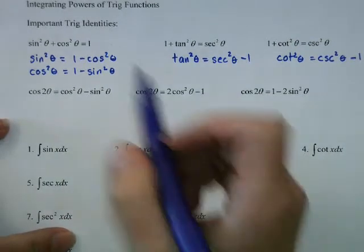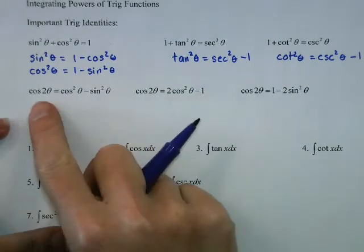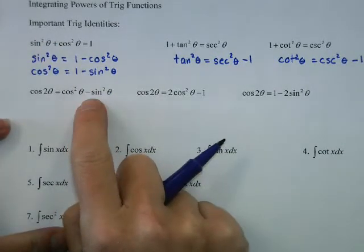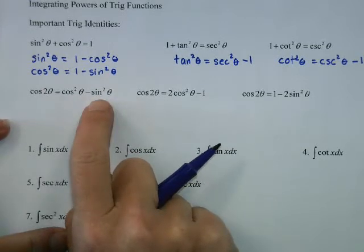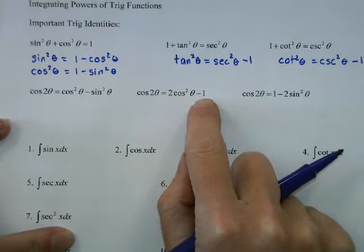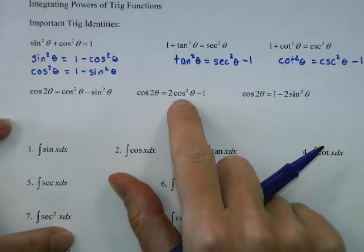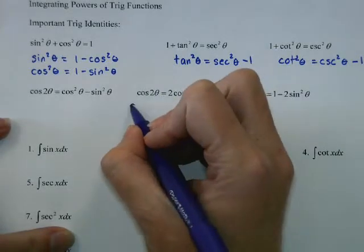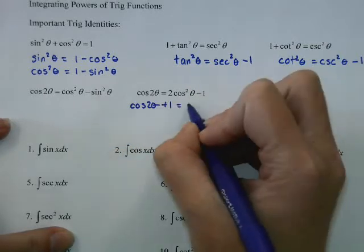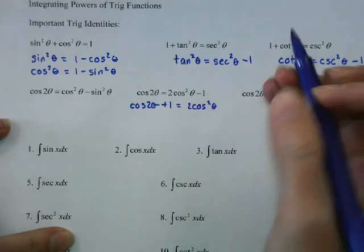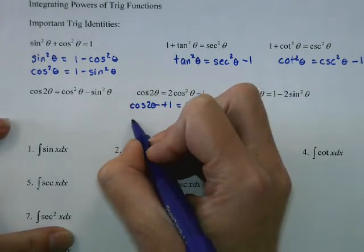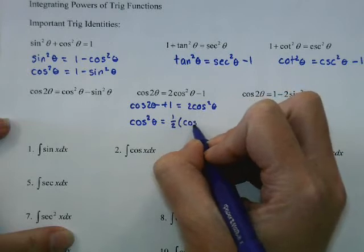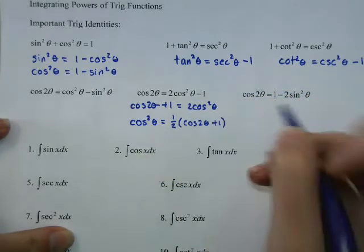Another identity we'll use is the double angle identity for cosine: cosine 2 theta equals cosine squared minus sine squared. If we substitute 1 minus cosine squared in for sine squared, we get 2 cosine squared minus 1. Solving for cosine squared: add 1 and divide by 2, giving us cosine squared theta equals one half times the quantity cosine 2 theta plus 1.